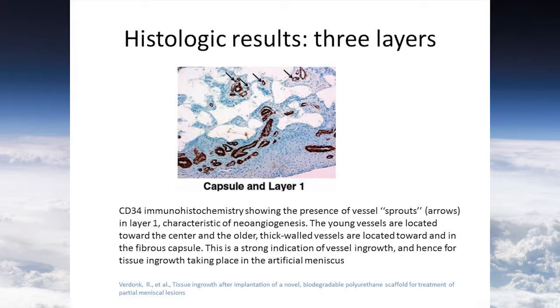The most important finding in these studies is three layers of newly regenerated tissue which resemble the native meniscus. Layer one of the newly regenerated tissue shows CD34 immunohistochemistry indicating the presence of vessel sprouts, characteristic of neoangiogenesis. The young vessels are located towards the center and the older, fixed-wall vessels are located towards the fibrous capsule. This is a strong indication for vessel ingrowth and hence tissue ingrowth taking place in the artificial meniscus.